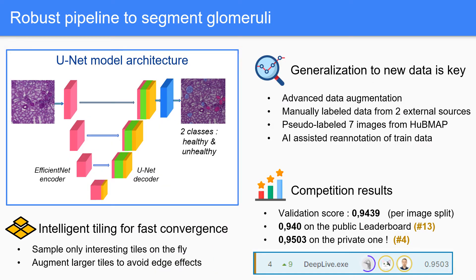We developed a robust pipeline for glomeruli segmentation. It leverages the U-Net architecture, which is widely used for medical applications, and it has two classes: one for healthy and one for unhealthy glomeruli. One of the tricks we use is intelligent tiling for faster convergence.